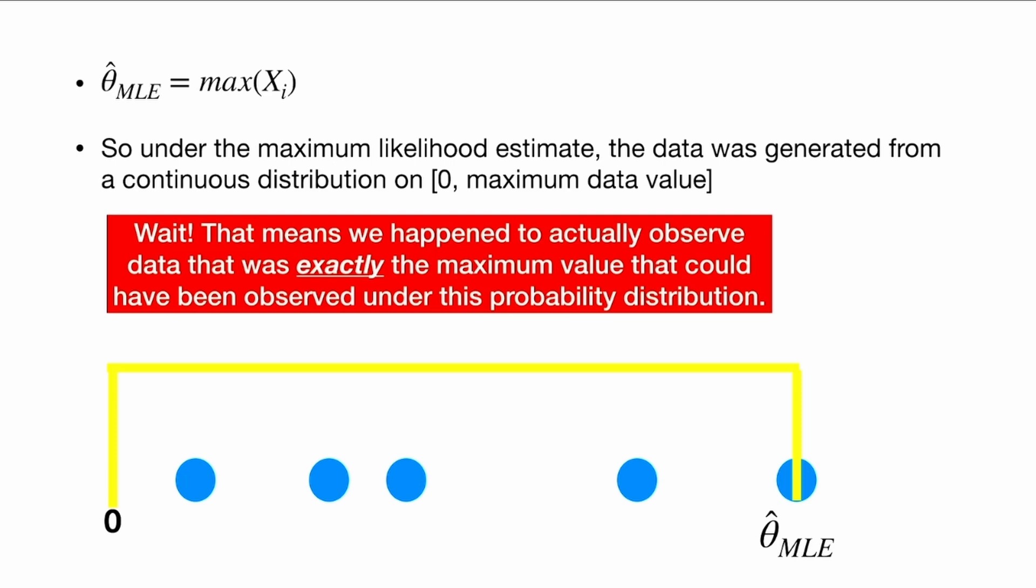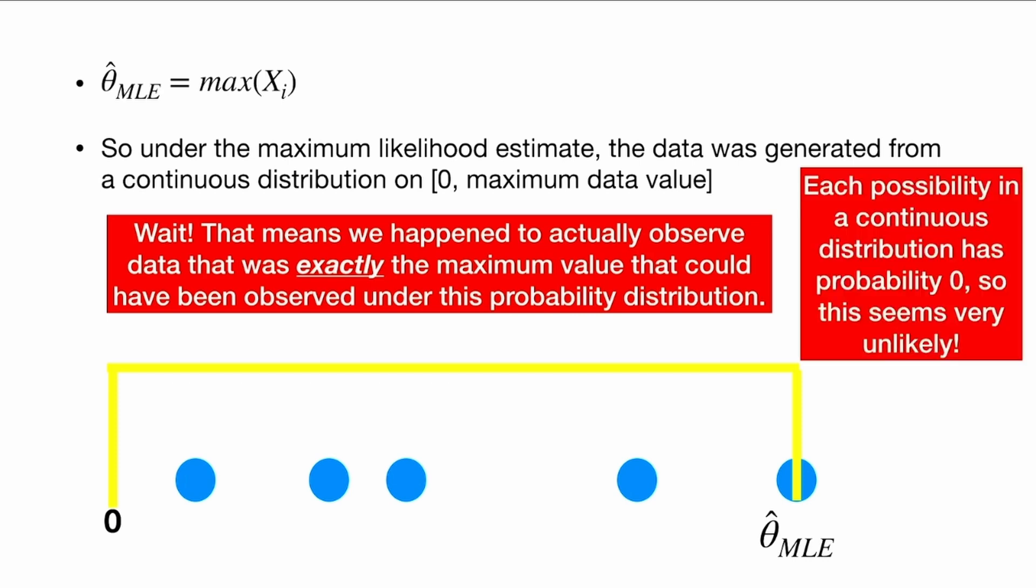But wait, that means that we happened to actually observe data that was exactly the maximum value that could have been observed under this probability distribution. And each possibility in a continuous distribution has probability zero. So this seems very unlikely.